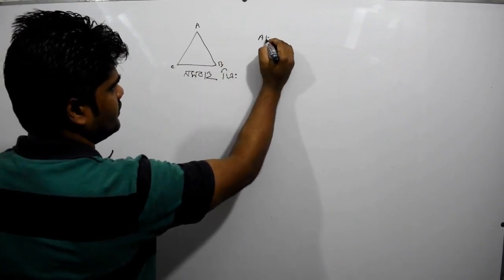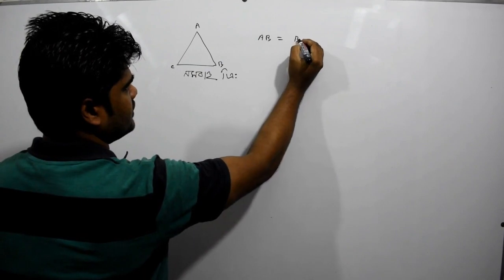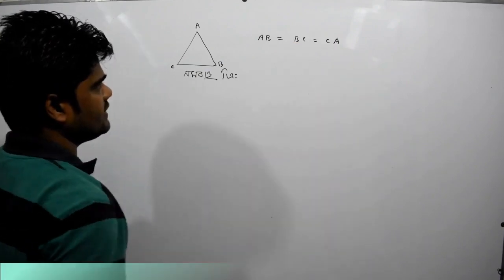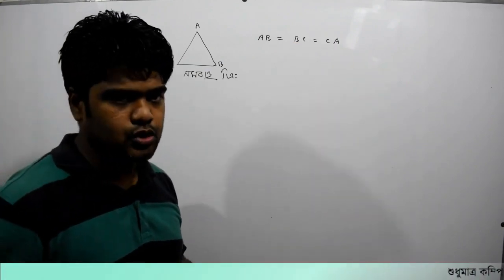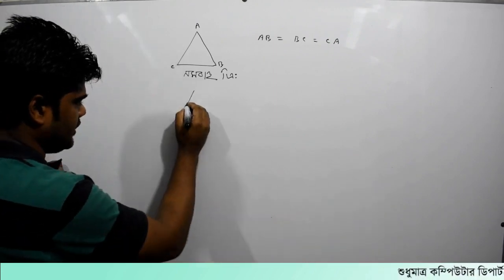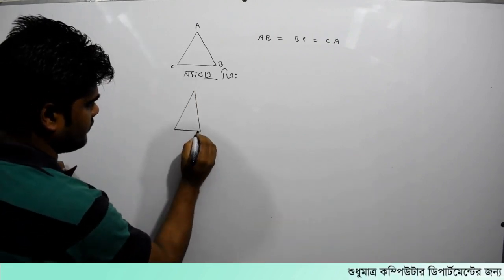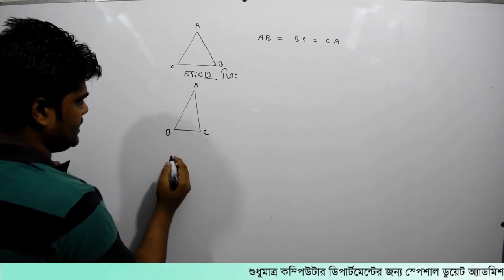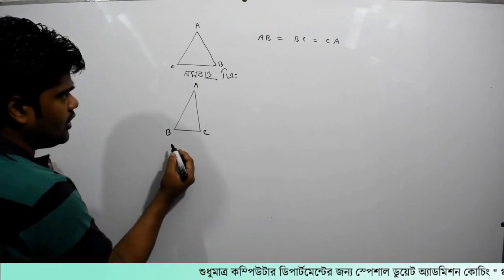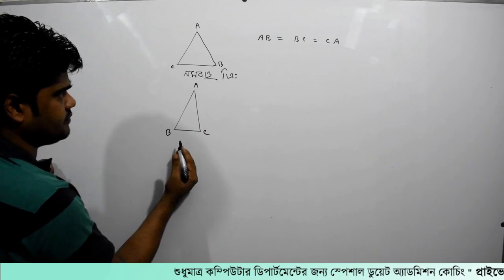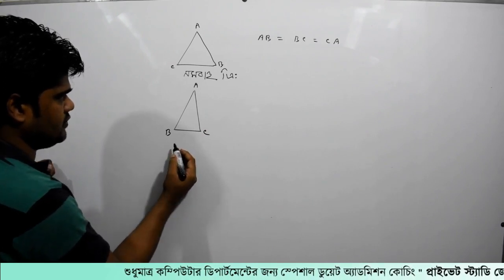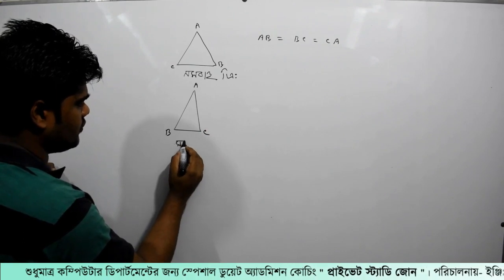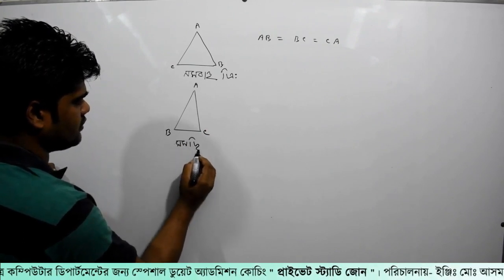A, B, B, C, C, A. The 3rd is the 2nd as you are the 2nd as you are the 3rd. Now the main thing is a 3rd is the 3rd as you are the 3rd.